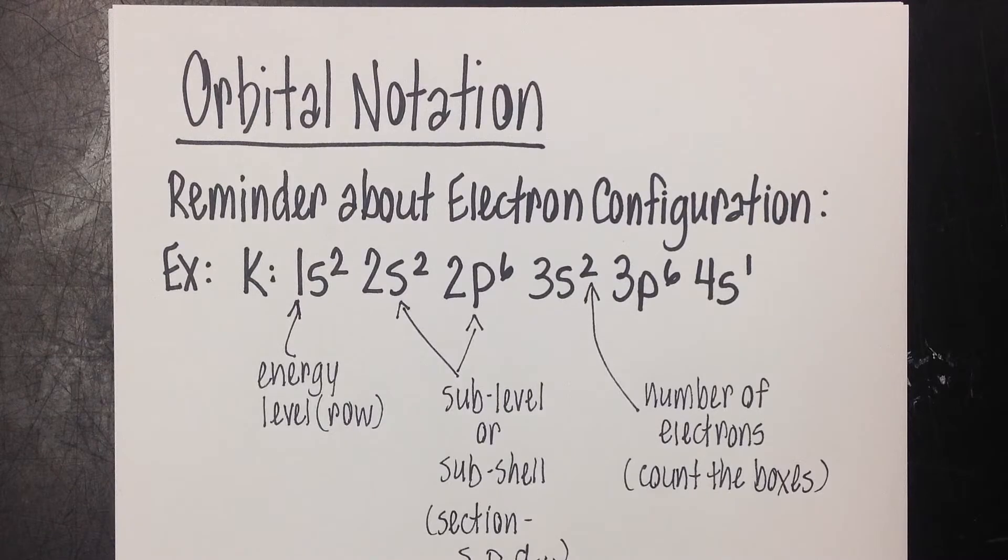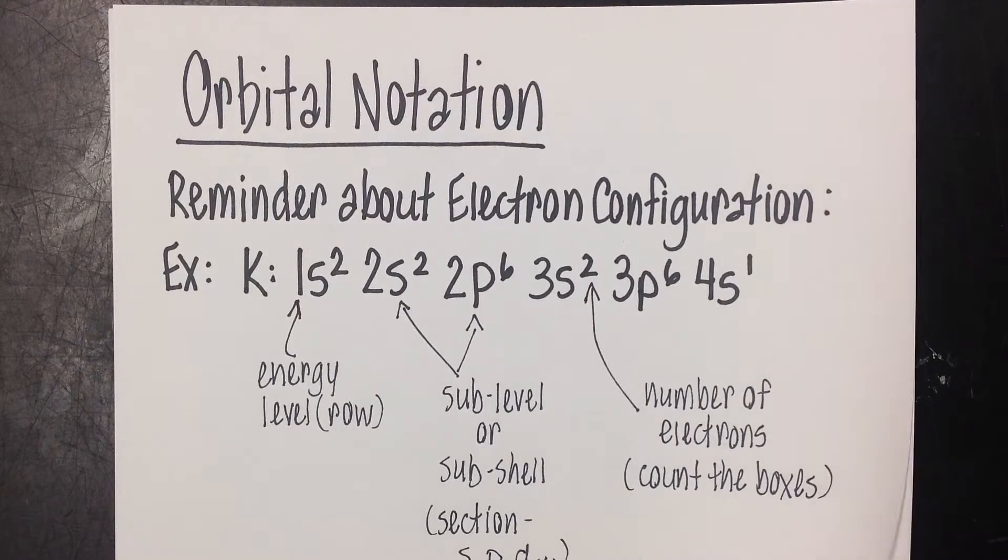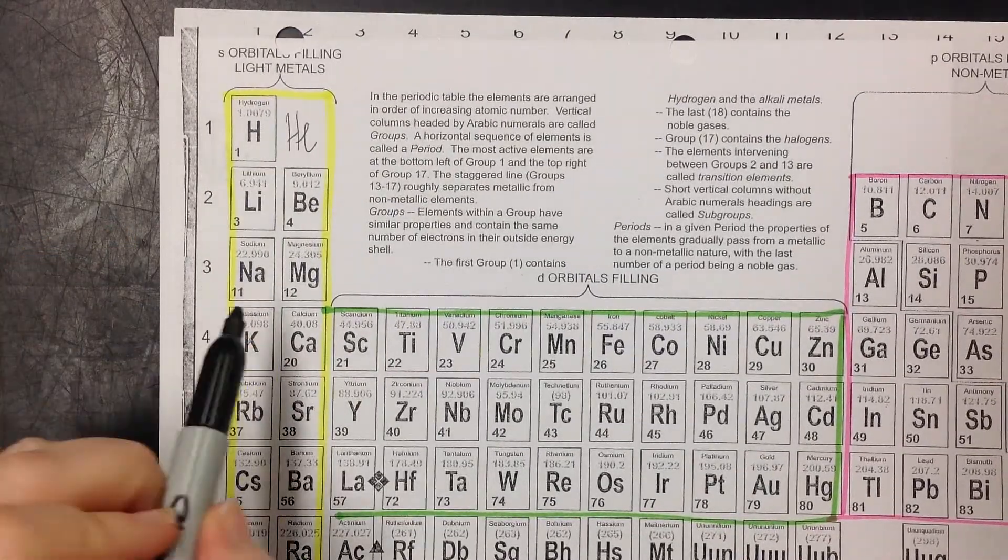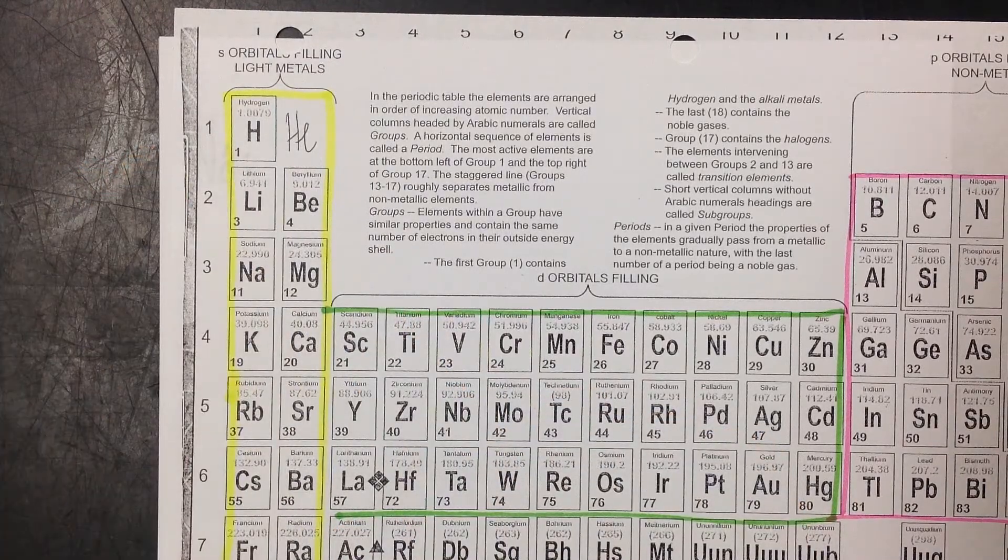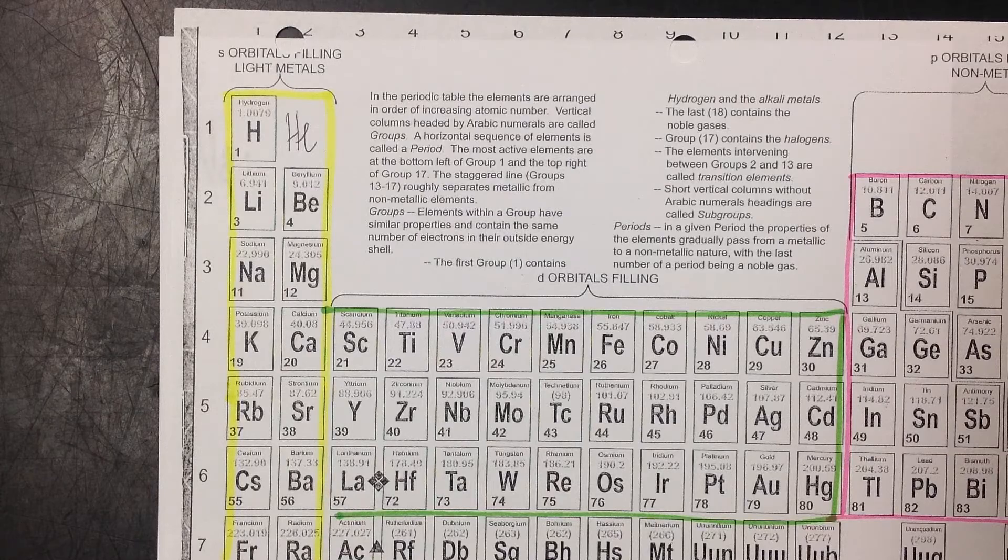So really the easiest way to do orbital notation is just to jump in and do some examples. I'm going to keep this really simple. Probably this is going to be good for any student who is a first-level chemistry student in high school or maybe just taking a basic chemistry class in college. So the first one we're going to do is sodium. Sodium's symbol is Na. We're going to locate that on the periodic table. Sodium is right here, the third row, the S block, and it's the first one over. So I know that my electron configuration is going to end with 3s1.